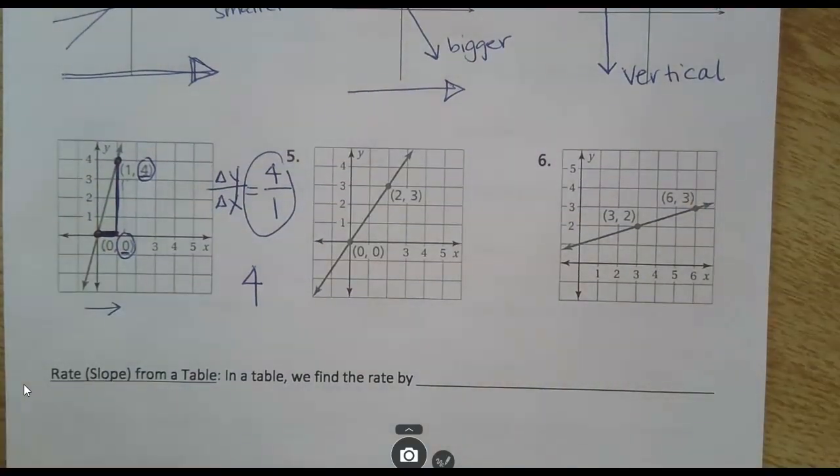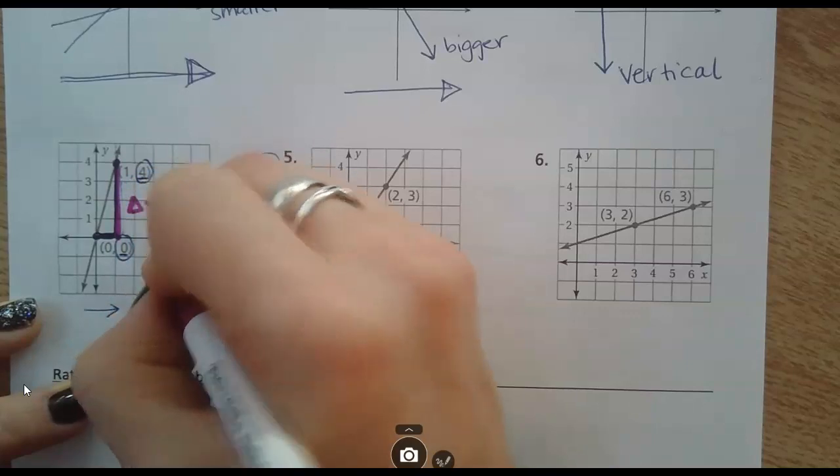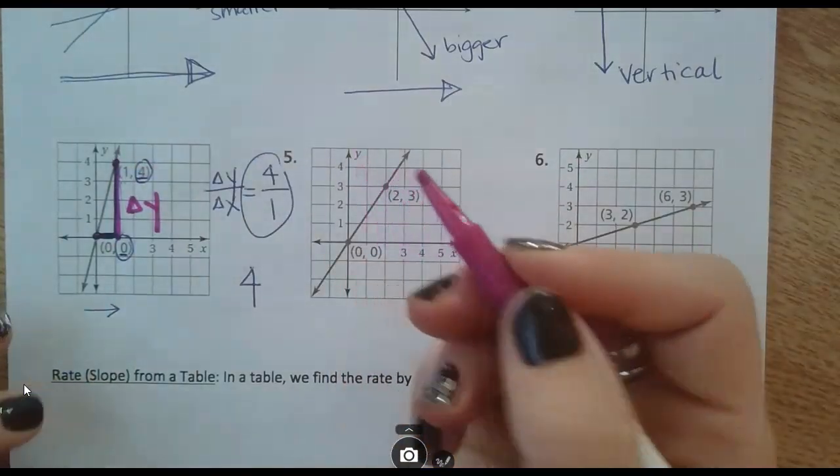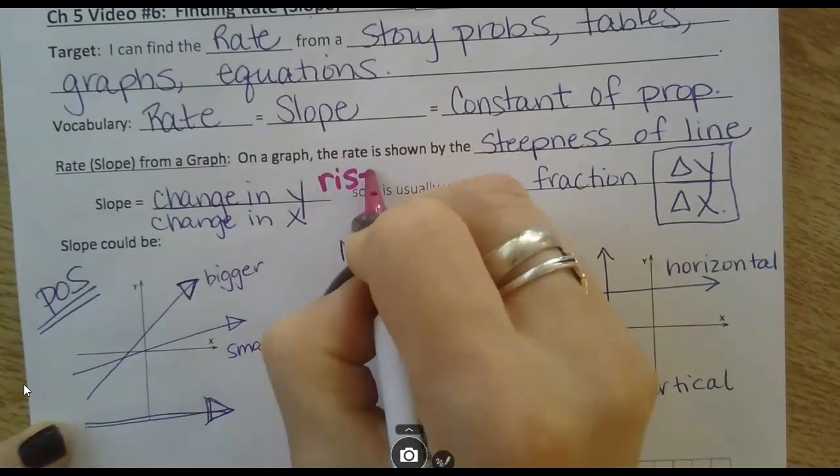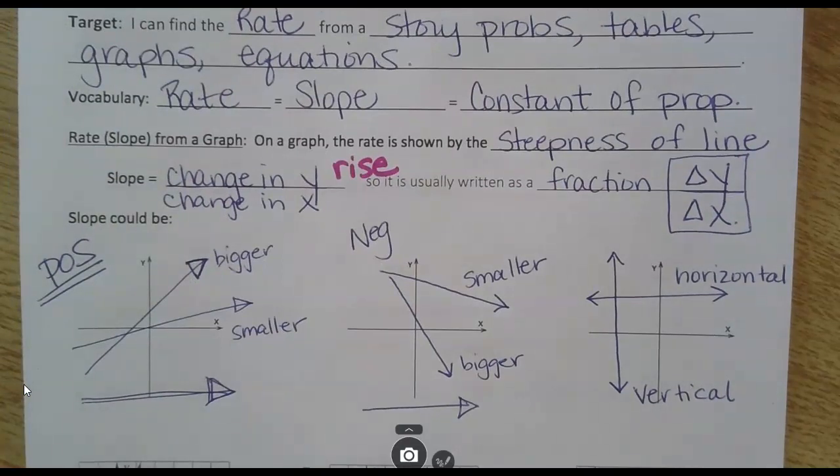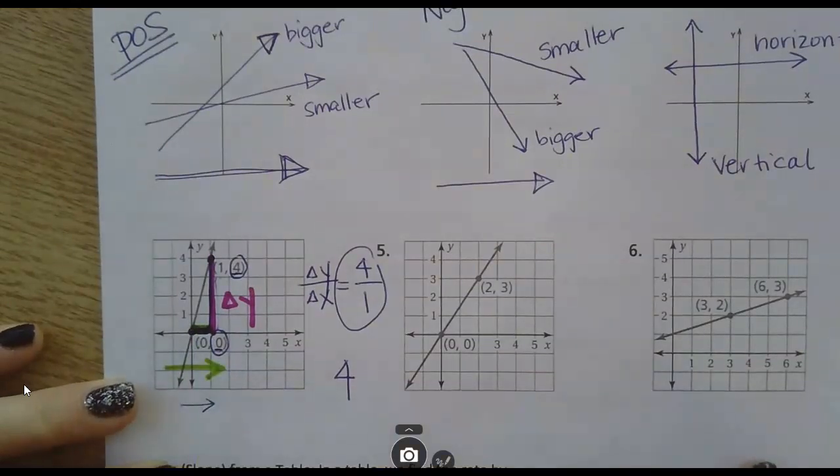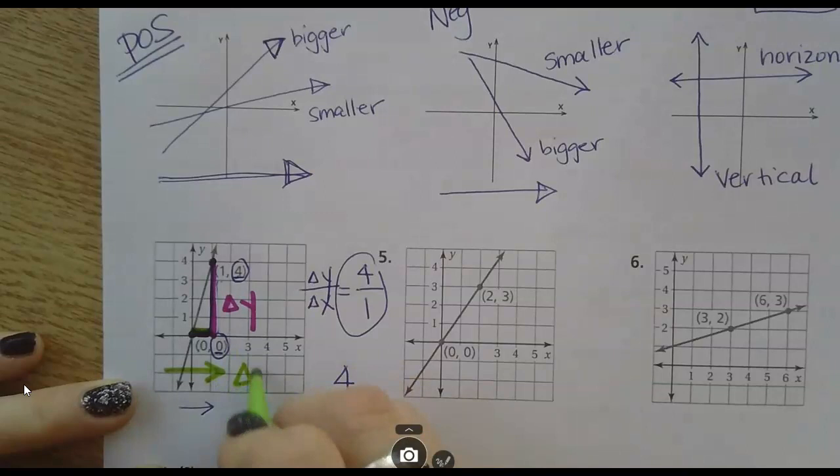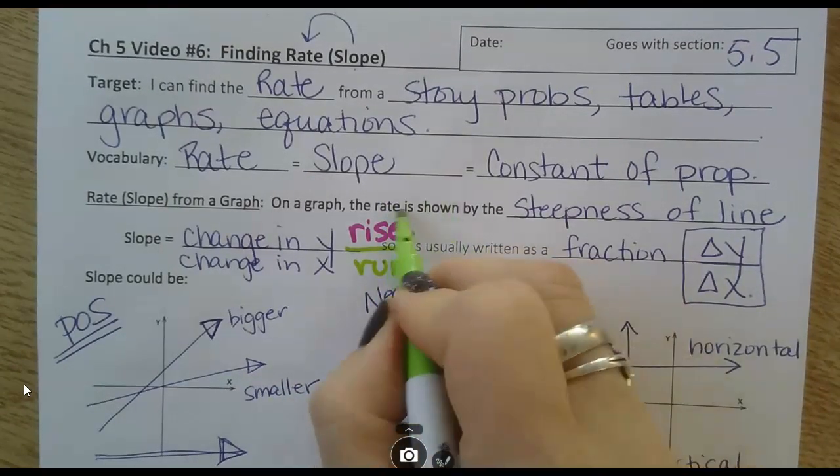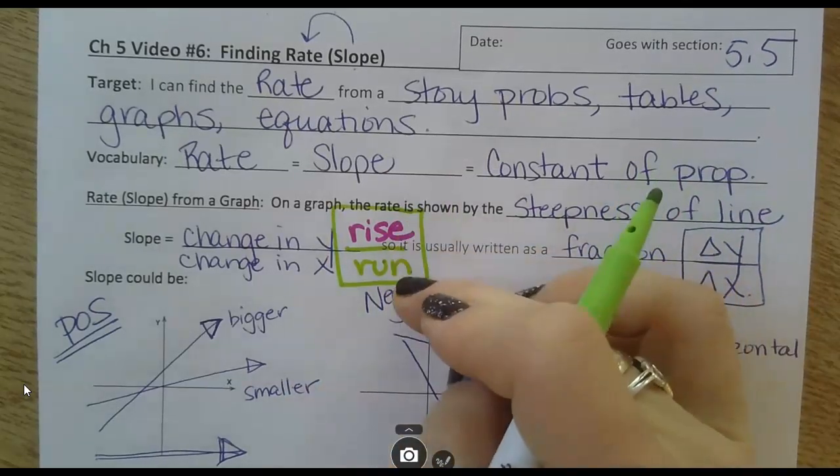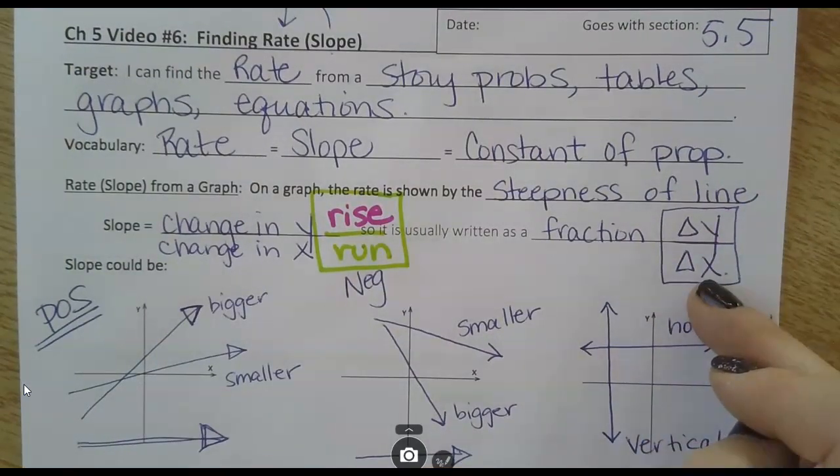I'm going to color code this. This is how much the y changed, the change in y, or how much it went up and down. Often we call this the rise. And then this from side to side, how much did I move this direction, is the run. That's the change in x. So you'll hear people refer to the formula for slope as rise over run. They're really just doing this change in y over change in x, and then you get a simplified fraction there.